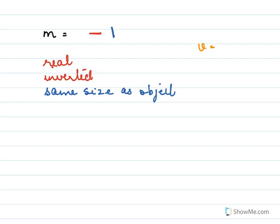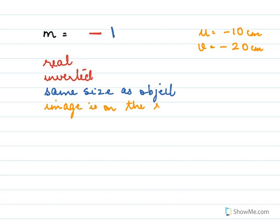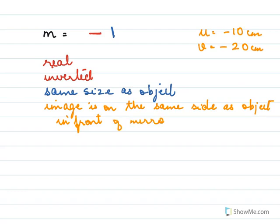Since v = −20 is negative and u = −10 is also negative, the image is on the same side as the object — in front of the mirror. Nature and position: real, inverted, same size as object, formed in front of the mirror.